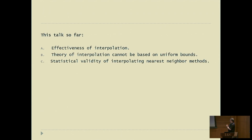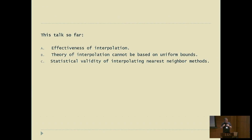So far this talk has shown: first, that empirically interpolation is effective; second, that the theory of interpolation cannot be based on uniform bounds; and third, that there are certain nearest neighbor methods which interpolate and are statistically optimal.